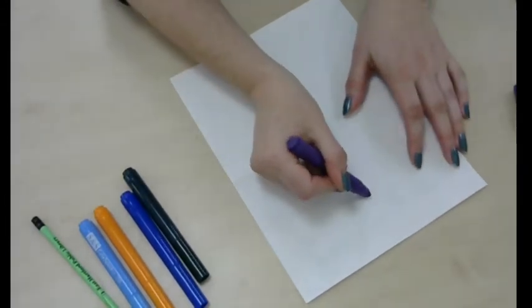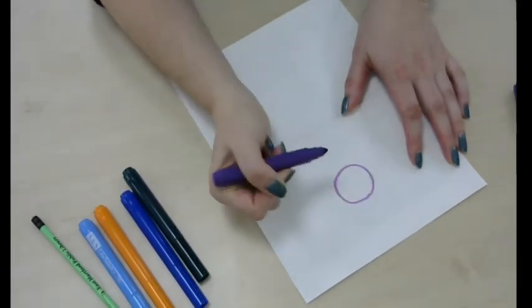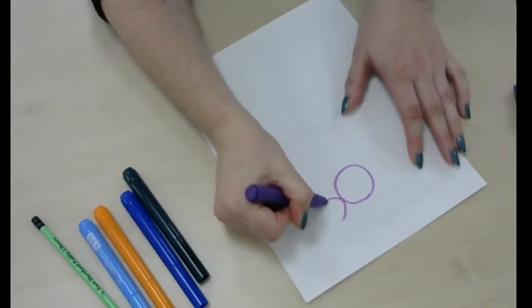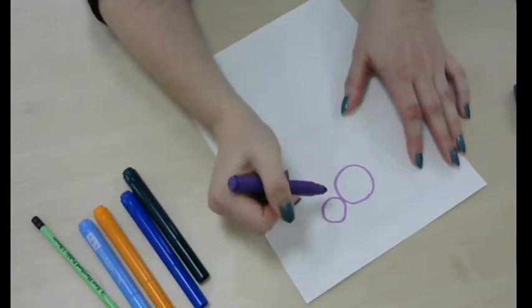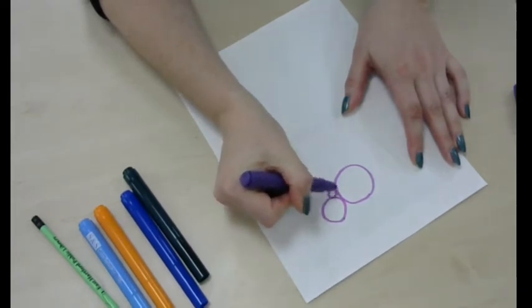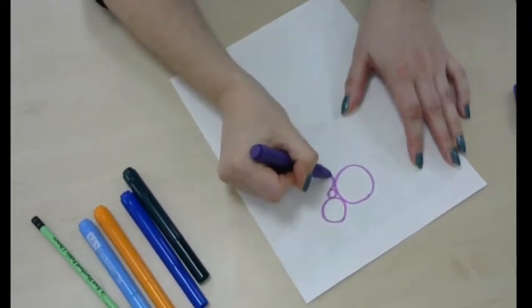Draw a circle on your page. Then draw more circles connected to it. Make them all different sizes, some big and some small. Try to have them all touching and kind of tucked in together.